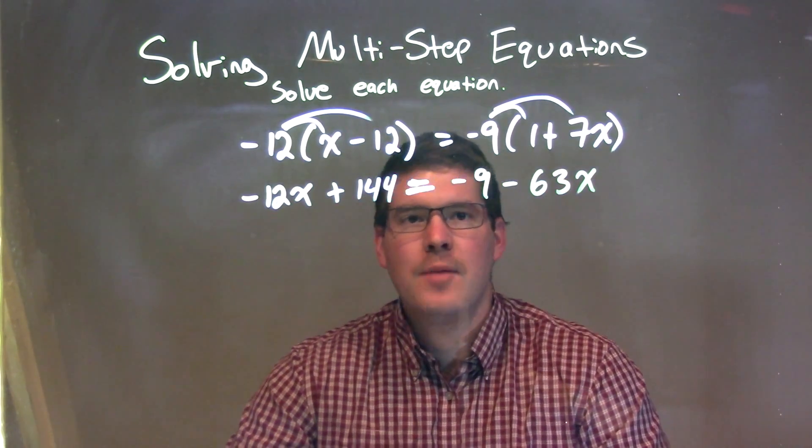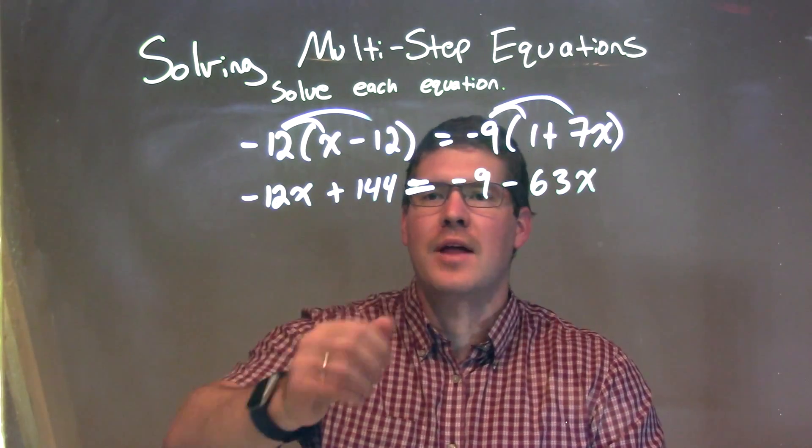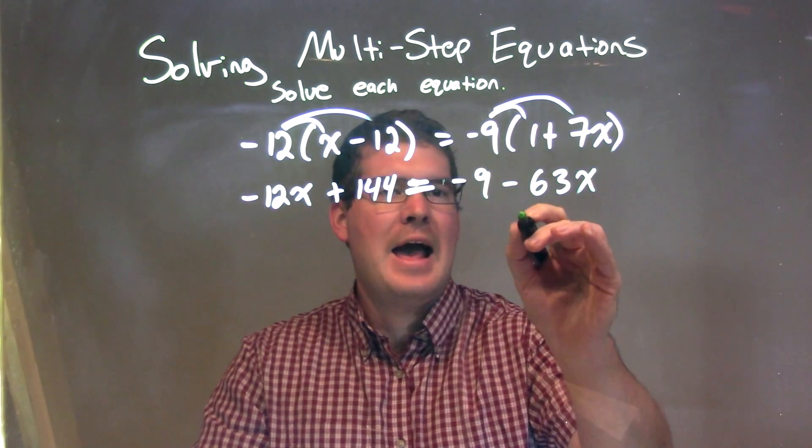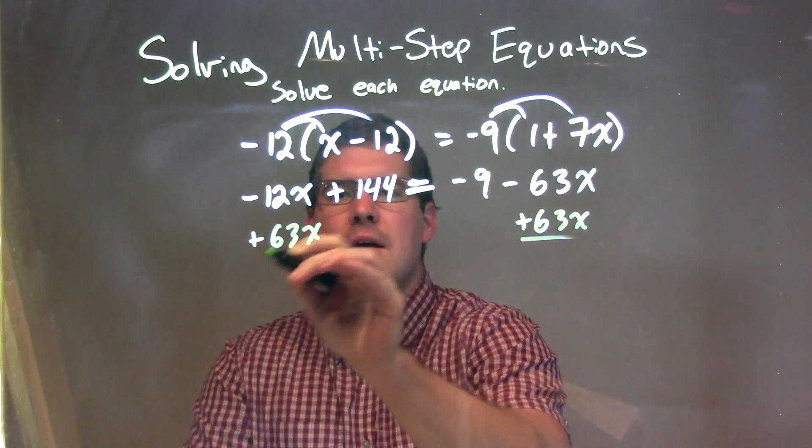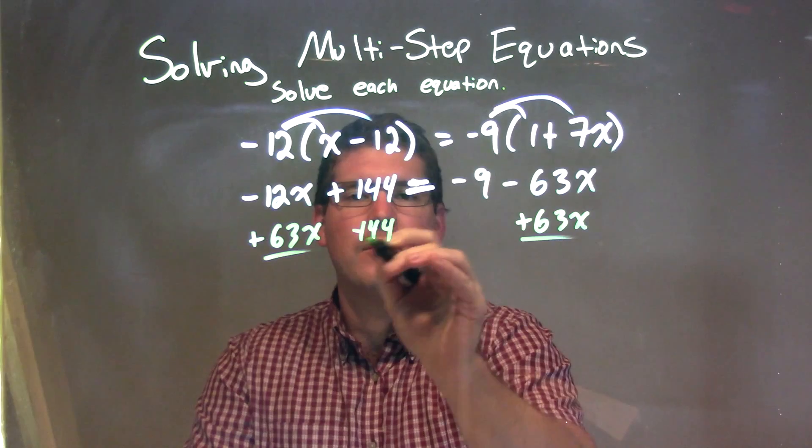Now what I want to do is combine my like terms. I'm bringing my variables to the left and my numbers to the right. I'm going to add 63x to both sides, and I'm subtracting 144 from both sides.